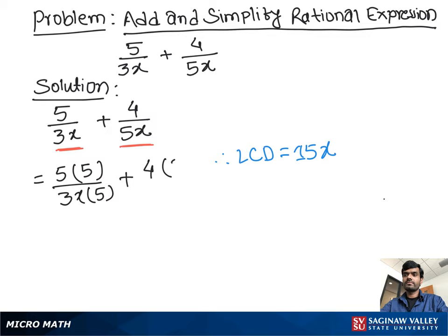Now 5 times 5 is 25 over 3x times 5 is 15x, plus 4 times 3 is 12 over 5x times 3 is 15x.